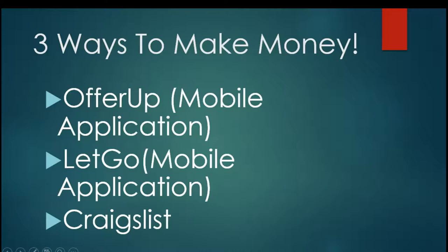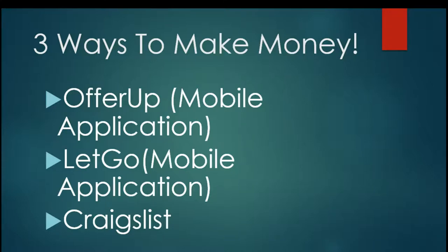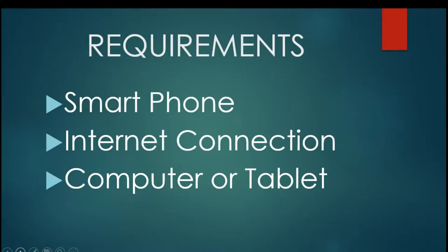In this tutorial I'm teaching three methods. The first one is OfferUp — this is a mobile application, so you'll need to download it on your smartphone. Then there's LetGo app and Craigslist. For Craigslist, you'll need a computer, a tablet, or your phone. The requirements for this course are a smartphone, an internet connection, and a computer or tablet for the Craigslist advertisements.